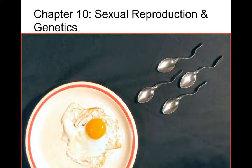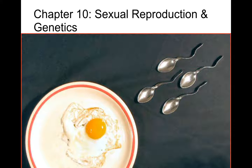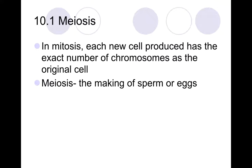We are going to look at our chapter 12 notes on sexual reproduction and genetics, and we're going to be talking about meiosis. We had a lot of conversation about egg and sperm and how each of them are what we call haploid cells.